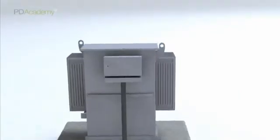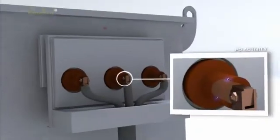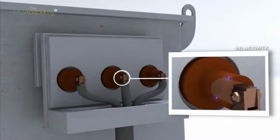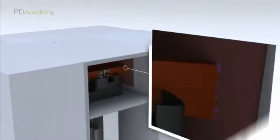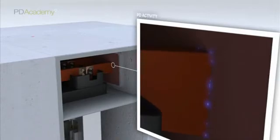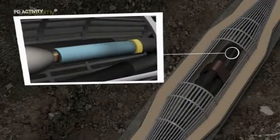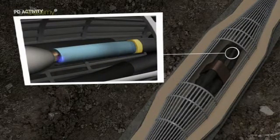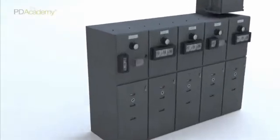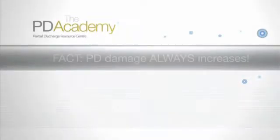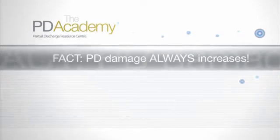Partial discharge activity has many causes including voids in solid insulation often caused during manufacture, mechanical breakdown or damage to insulation sometimes caused during installation, particle contamination, design defects such as poor stress control or irregularities, or a combination of factors that are characteristic of assets getting old and ultimately breaking down. PD activity may be intermittent or it may vary in intensity over time, but once it starts the damage always increases.